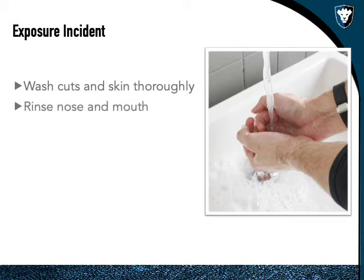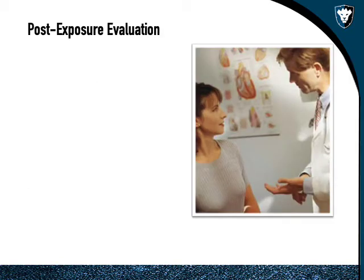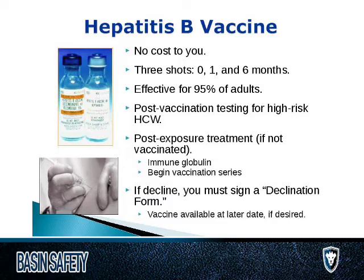If an exposure incident occurs, immediately report it after providing care and response. Wash cuts and skin thoroughly, rinse nose and mouth, flush eyes with clean sterile solution, and clean all contaminated surfaces with bleach or antibacterial material. A medical evaluation will follow — a doctor will do a blood test. The hepatitis B vaccine is free and effective for most adults, though OSHA does allow workers to decline it while taking additional precautions.